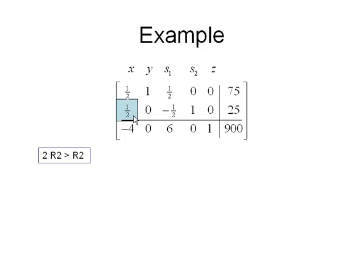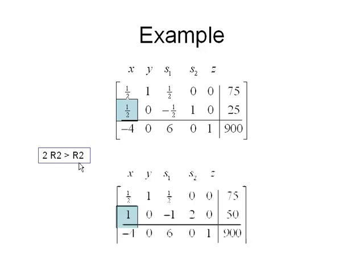So to change that pivot to being a 1, I'm going to need to take 2 times row 2 and put the result in row 2. When I do that, you'll see that row 2 becomes 1, 0, negative 1, 2, 0, and 50.